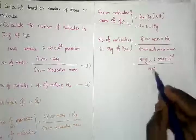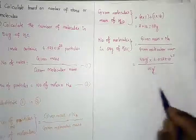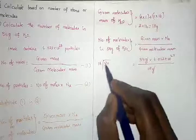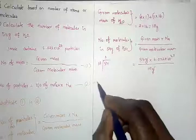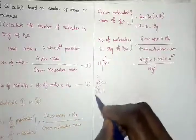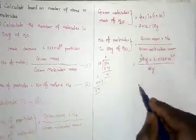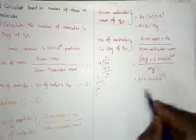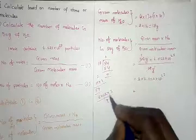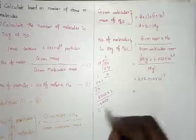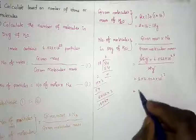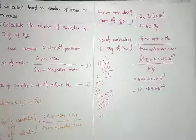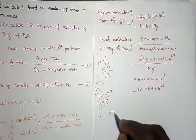Now, 54 divided by 18 equals 3. So we have 3 × 6.023 × 10²³. Multiplying: 3 × 6 = 18, 3 × 0.023 = 0.069, giving us 18.069 × 10²³ molecules.